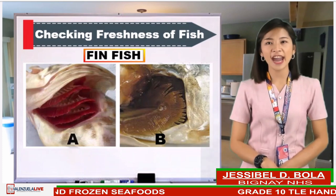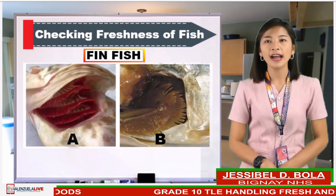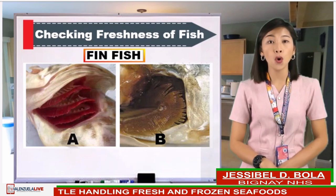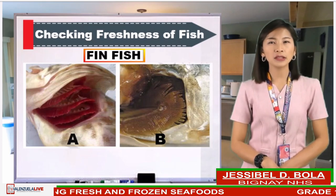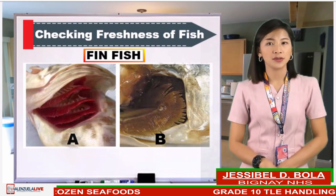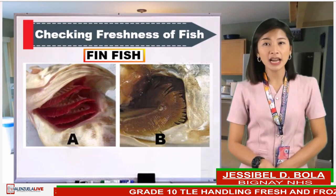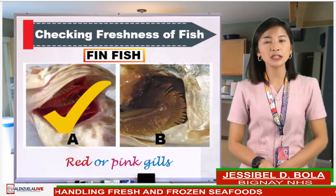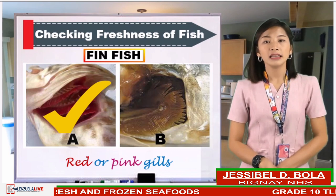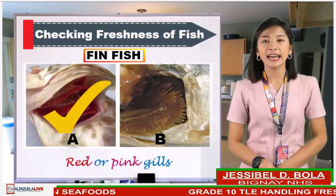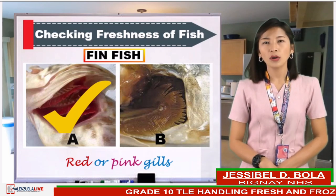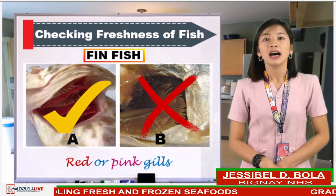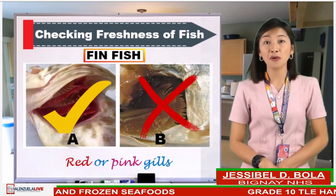The third thing to check is the fish gills, or hasang in Tagalog. The color of gills must be red or pink. Which of the two pictures is fresh — picture A or picture B? Picture A is the fish which has fresh gills. As you can see, it has red gills. Picture B is not an example of fresh gills because it has a brown color already.